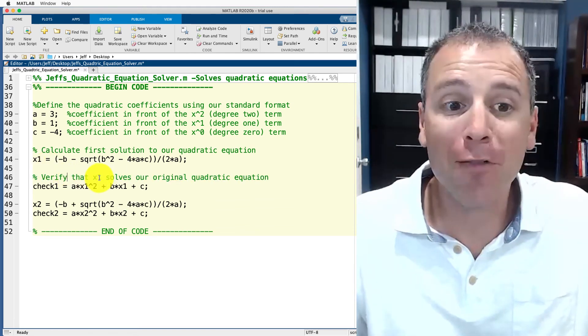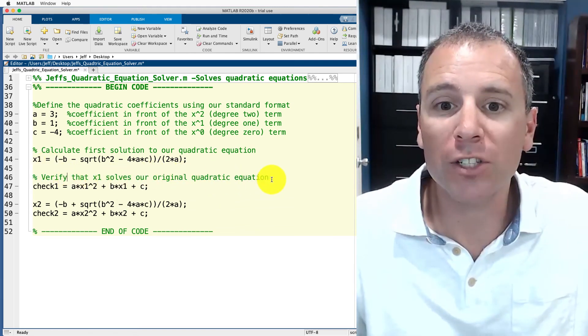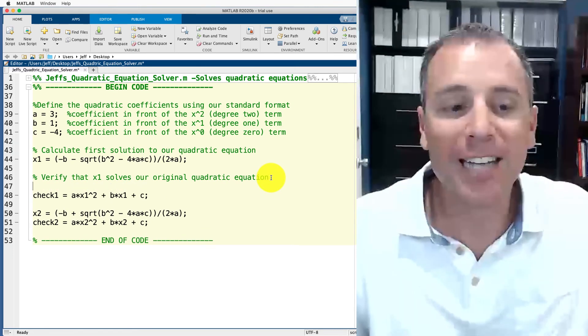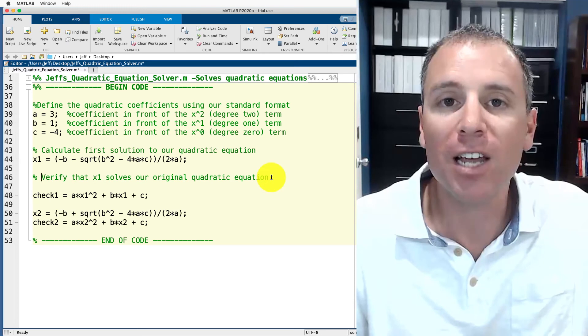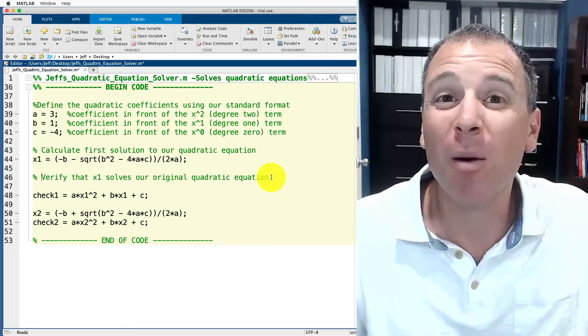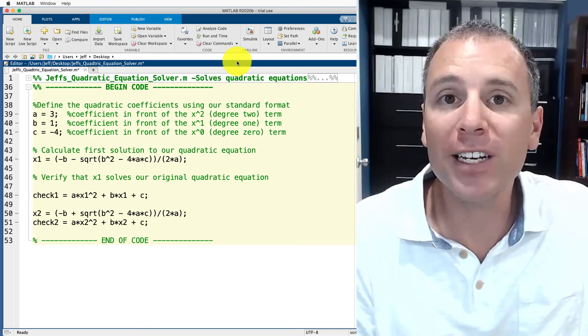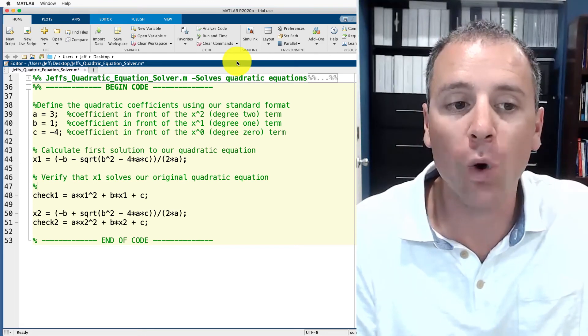Check one is designed to verify that x1 solves our original quadratic equation. There's actually more information that I want to add about check one. In this case, I like to use in my comments strategic indexing. We're going to talk more about that as we write more code. In order to get to the next level of indexing, I'm going to use four spaces. So here I do one, two, three, four.